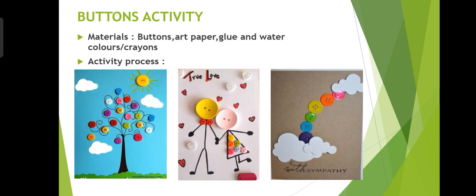The next activity is the buttons activity. Materials required: buttons, art paper, glue, and watercolors or crayons. Activity process: take a paper, draw a picture such as a sun or clouds, then stick buttons onto the drawing. The children create a fine and fantastic picture through this buttons activity.